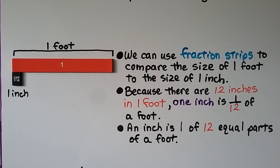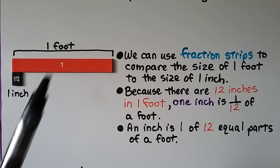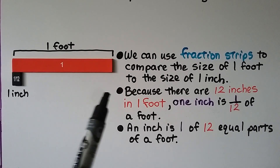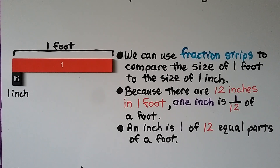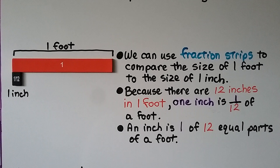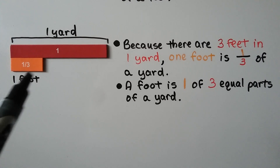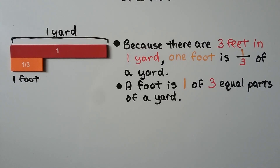We can use fraction strips to compare the size of one foot to one inch. Because there are 12 inches in one foot, one inch is one-twelfth of a foot — an inch is one of 12 equal parts of a foot. Because there are three feet in one yard, one foot is one-third of a yard — a foot is one of three equal parts of a yard.